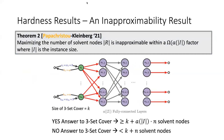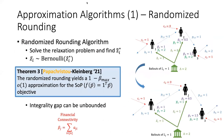Moreover, there is no hope in finding an approximation algorithm for maximizing the number of solvent nodes. For this, we create a cascade as in the picture: a yes answer to the 3-set cover problem corresponds to the set cover nodes and all elements being activated, and a no answer corresponds to at most the nodes of the first level being activated. Since this cascade can be made arbitrarily deep, the inapproximability result follows.